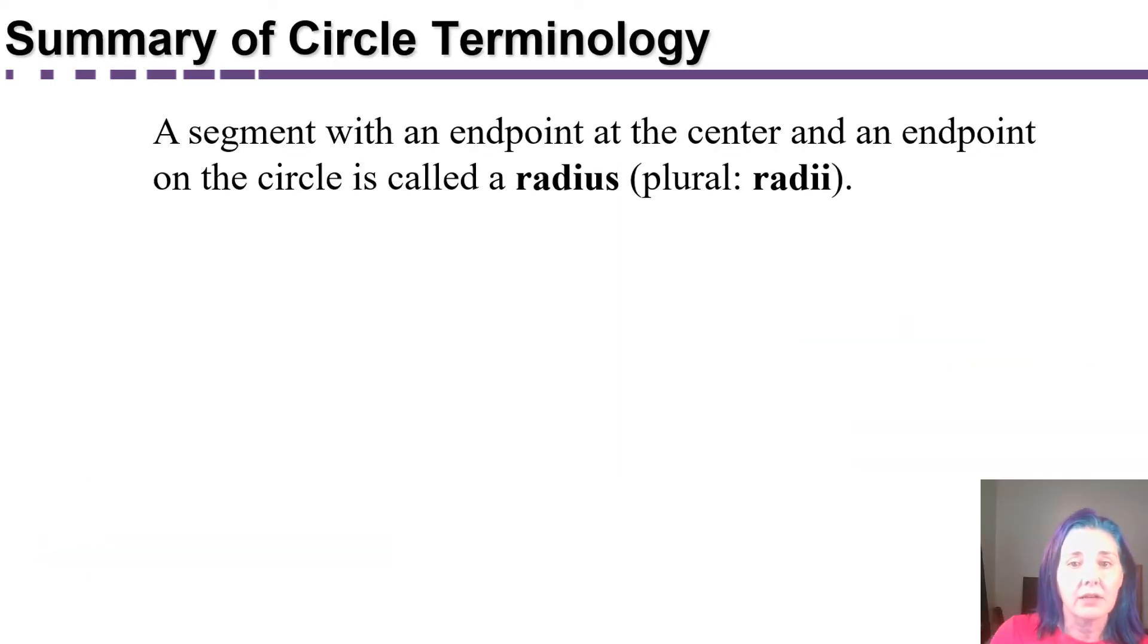To summarize, a segment with an endpoint at the center and an endpoint on the circle is called a radius. If you have more than one, they're called radii.